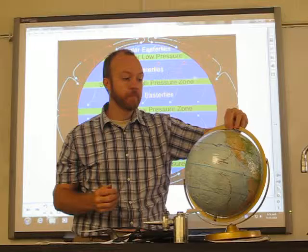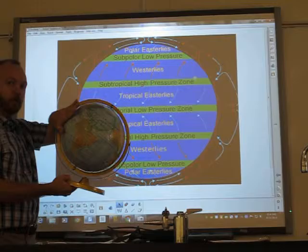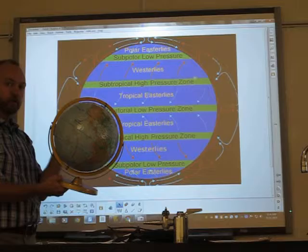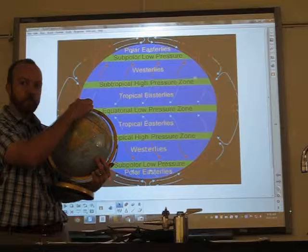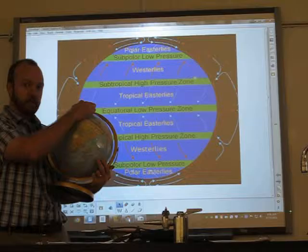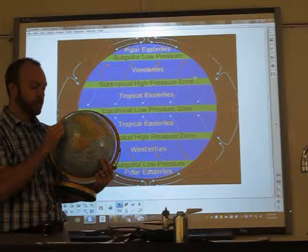Now, the Coriolis effect is an effect of a moving reference frame. So, here we have a globe, and we know that the earth rotates on its axis. So, the globe is moving. Now, the atmosphere, the air, is above the globe, and by and large, it moves along with the globe. It's dragged along with the globe because of friction in the atmosphere. I want you to notice, though, that as the earth moves in a circle, the equator has to go a greater distance than the poles.